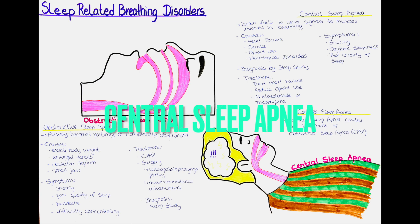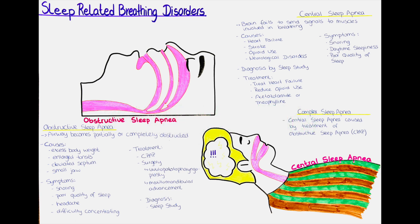Let's now talk about central sleep apnea. Central sleep apnea is a type of sleeping disorder that occurs when the brain fails to send signals to the muscles responsible for breathing during sleep. This leads to a temporary cessation of breathing, which can last for a few seconds or longer and can occur multiple times during the night. The most common cause is a dysfunction in the brainstem, which controls breathing.